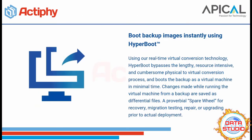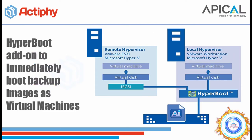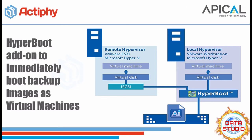Using our real-time virtual conversion technology, HyperBoot bypasses the lengthy, resource-intensive, and cumbersome physical-to-virtual conversion process and boots the backup as a virtual machine in minimal time. Changes made while running the virtual machine from backup are saved as differential files — a proverbial spare wheel for recovery, migration, testing, repair, or upgrading prior to actual deployment.